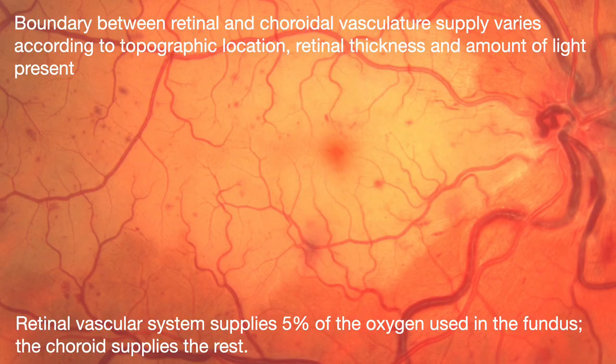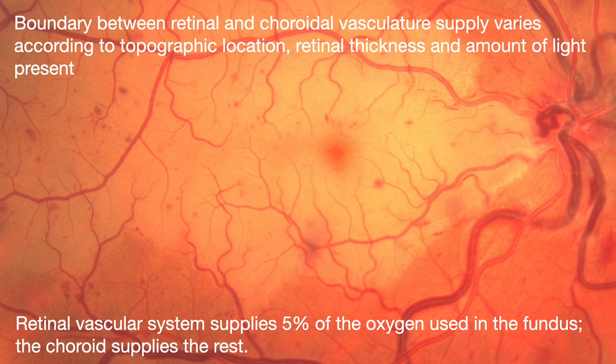So we can see blood vessels in the retina. Does anybody know what this diagnosis is, by the way? So in the center we've got an occlusion of a retinal artery — maybe a cilioretinal artery — and there's also a lot of venous tortuosity. It's a complex picture. I think it's a cilioretinal artery occlusion with a CRVO as well. Unusual scenario, but it's out there. The boundary between the retinal and choroidal vasculature supply does vary.